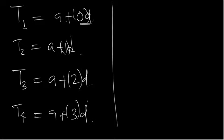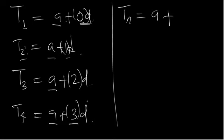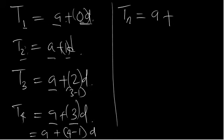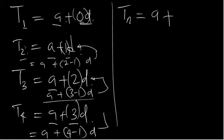Looking at it thoroughly, you see that the coefficient of D for the first term is 0, for the second term is 1. This value is always one less than the term number — the difference between 4 and 3 is 1. That means the nth term will be equal to A plus (n minus 1) times D. That is how the formula is derived.